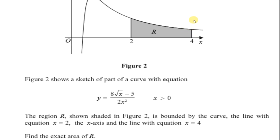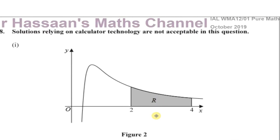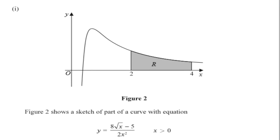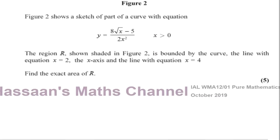When we integrate a function between limits — here 2 and 4 — with respect to x, we find the area under the curve up to the x-axis between those limits. So we have to find the integral of y with respect to x between the limits a and b, and that gives the area between the curve, the x-axis, and the lines x equals a and x equals b.